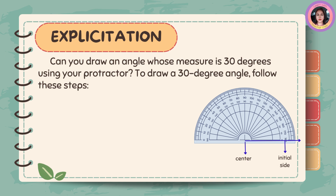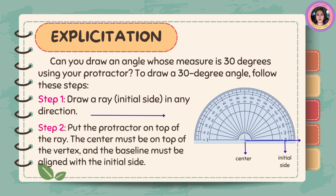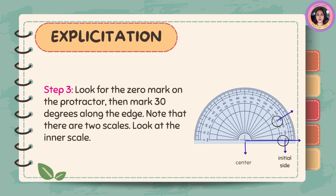Follow these steps. Step 1: Draw a ray or initial side in any direction. Step 2: Put the protractor on top of the ray. The center must be on top of the vertex, and the baseline must be aligned with the initial side.